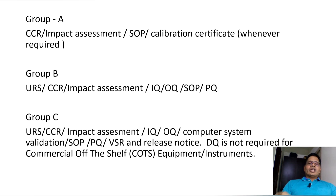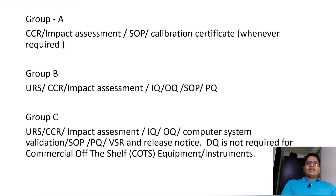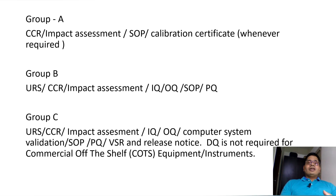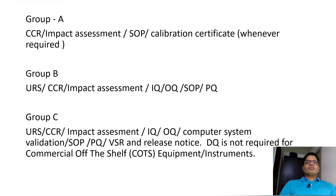Design qualification is not required for commercially available equipment. For Group C instruments, design qualification may apply in some cases, but for instruments readily available in the market — such as HPLC, GC, FTIR, or UV — design qualification is not required. However, if you are procuring a custom stability chamber, then yes, design qualification should be performed. Based on the system boundary and your organization's master validation plan, you determine the qualification requirements for Group A, Group B, and Group C instruments.